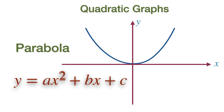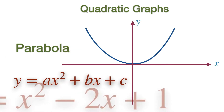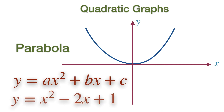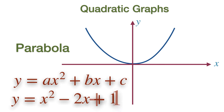The variable X has the highest power of 2. For example, Y equal to X squared minus 2X plus 1 is a quadratic function, where A corresponds to the value of 1, B corresponds to the value of minus 2, and C has the value plus 1.